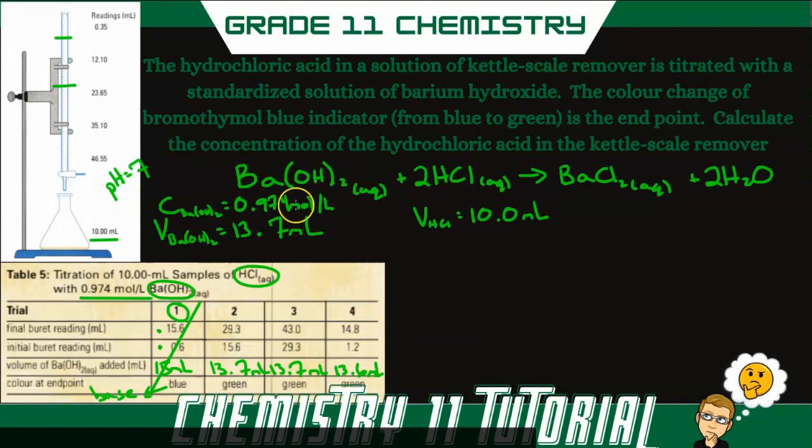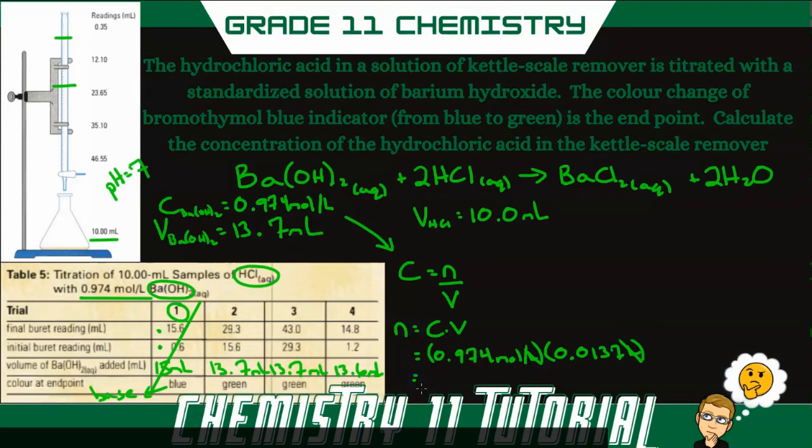So first, we're going to look at the number of moles of barium hydroxide. And we're going to use that using our equation for concentration, which is moles per volume. So rearranging this for the number of moles, we get concentration times volume. And for barium hydroxide, that's what I'm working with, concentration is 0.974 moles per liter times our volume, which you want to convert into liters. So divide by 1,000, you get 0.0137 liters. So our liters cancel, and we end up with 0.0133 moles of barium hydroxide.